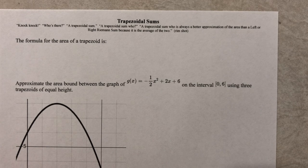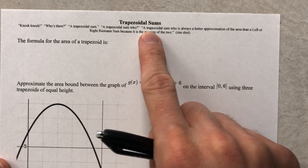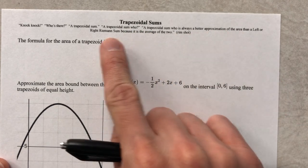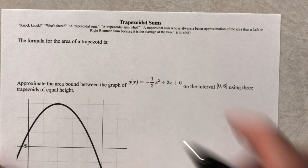So let me tell you a joke. Knock, knock. Who's there? A trapezoidal sum. Trapezoidal sum who? A trapezoidal sum who is always a better approximation of the area than the left or right Riemann sum because it is the average of the two.